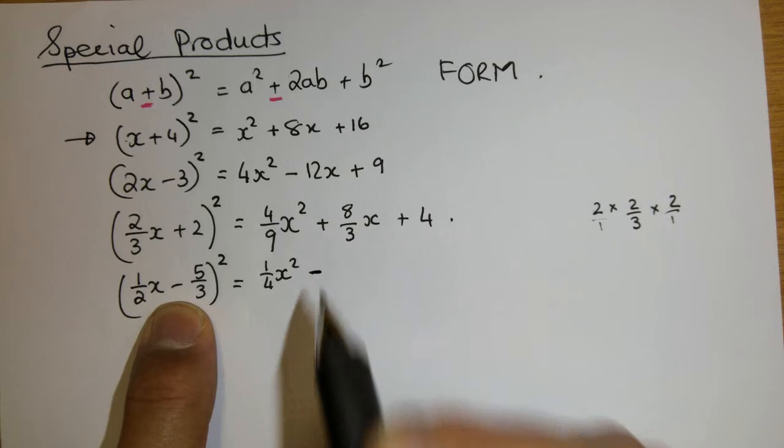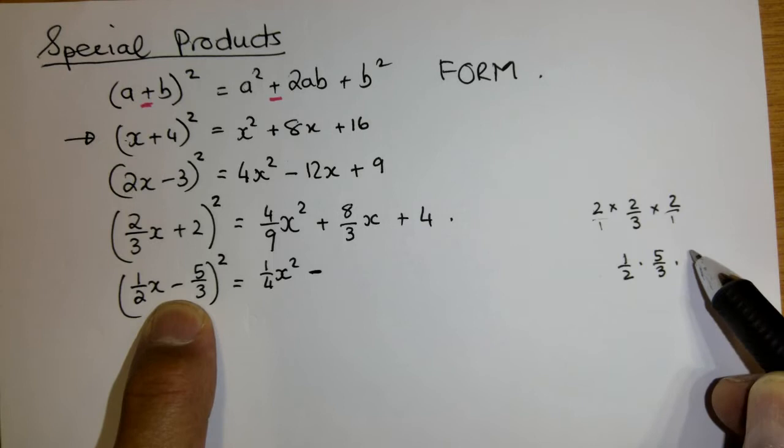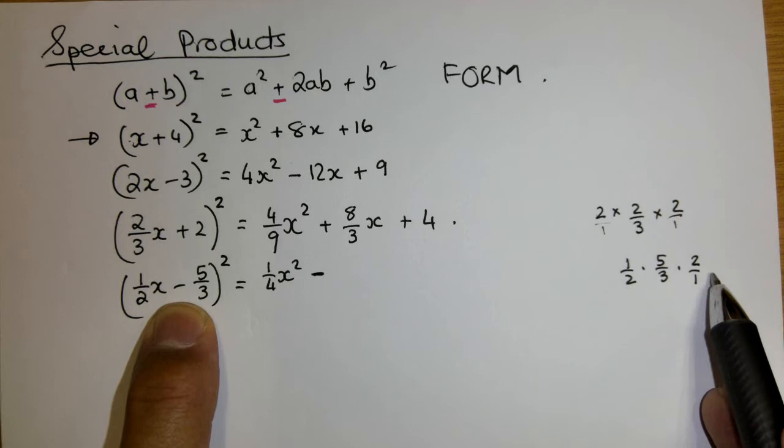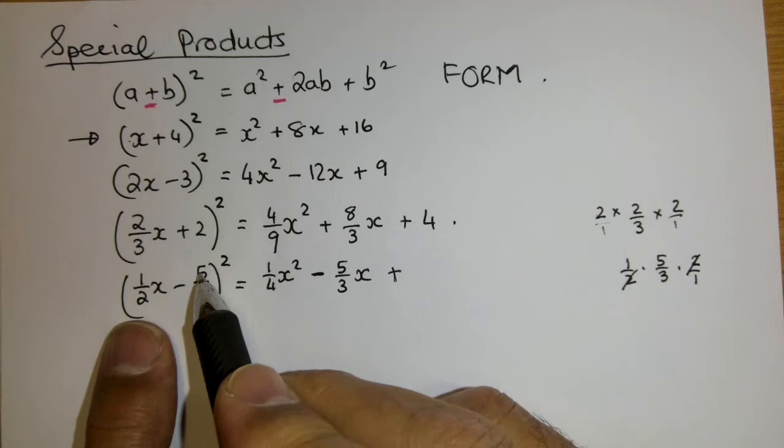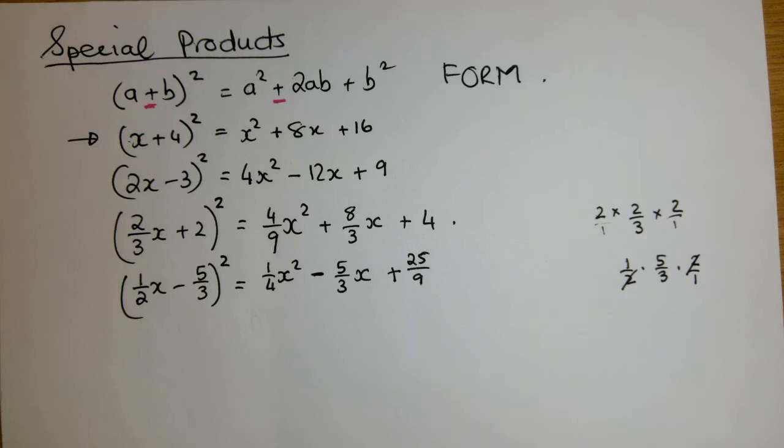Now you can write the x next to the quarter or you could have said x squared over 4. The middle term is going to be negative. What is it going to be? It's going to be a half multiplied by 5 over 3 multiplied by 2. Now remember this is 2 over 1. And if you multiply a half with 2, the 2's are gone. So it's merely a 5 over 3x for the middle term. Then plus the second term squared which is 25 over 9.